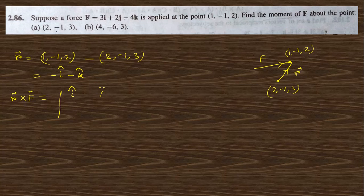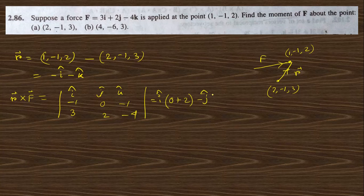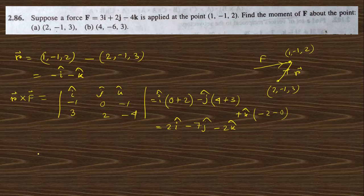The moment of force is r cross F. Using the determinant with i, j, k: r = (−1, 0, −1) and F = (3, 2, −4). Expanding: i cap(0·(−4) − (−1)·2) − j cap((−1)·(−4) − (−1)·3) + k cap((−1)·2 − 0·3). This gives i cap(0 + 2) − j cap(4 + 3) + k cap(−2 − 0) = 2i cap − 7j cap − 2k cap.